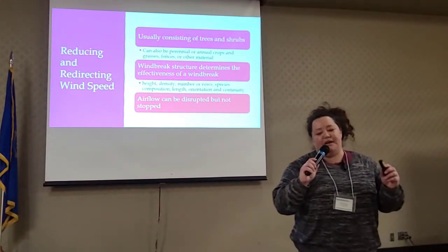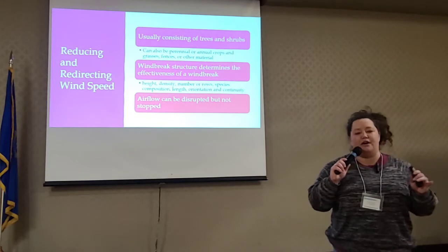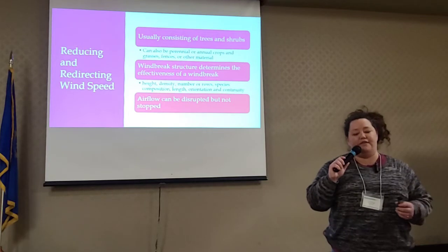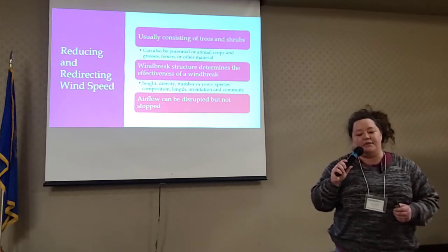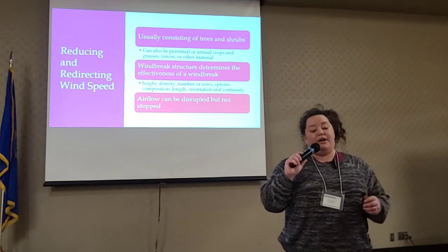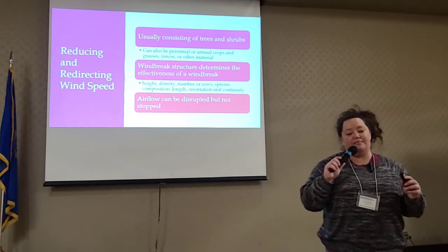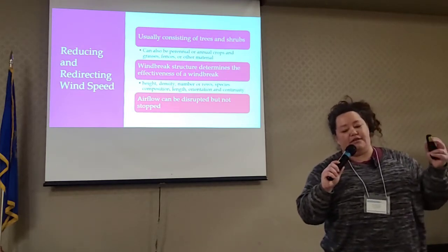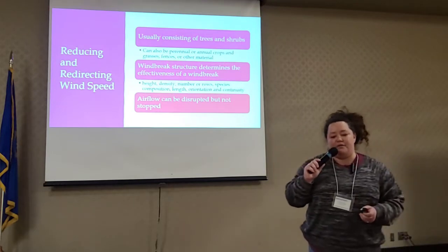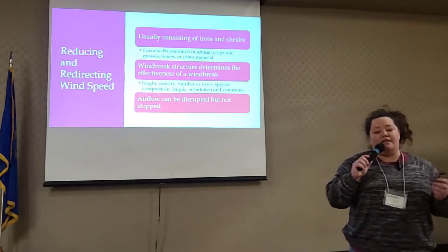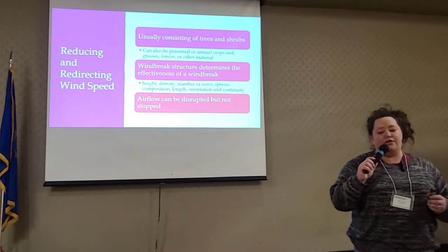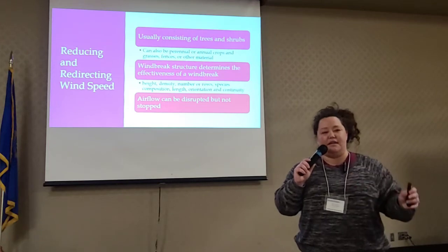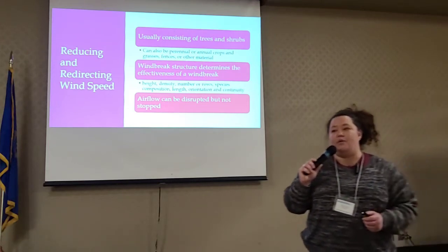When we're talking about reducing wind speed, we're mainly using trees and shrubs for our purposes. Some people do use fences such as snow fences, and you can use grasses and other material as well. Windbreak structure really determines how effective that windbreak is. When we're talking about structure, we're talking about the height, the density, the number of rows, the species, the length of the windbreak, and the orientation and continuity of it. We want to make sure we're taking all of those things into consideration when we are building our plans for our windbreaks for your producers.